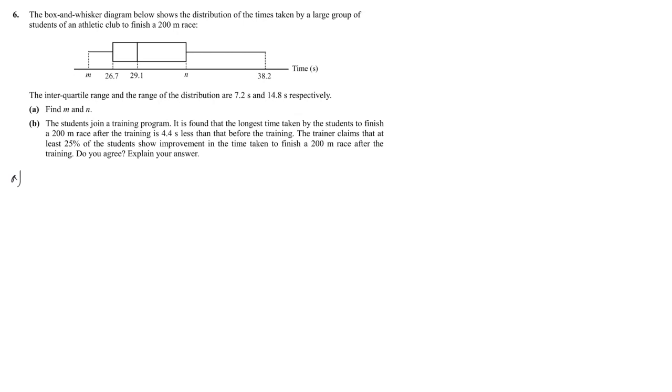This time they show you the distribution of certain data using a box-and-whisker diagram. A box-and-whisker diagram separates the data into four quarters. So the first quarter lies between M and this number, second quarter between 26.7 to 29.1, third quarter and also fourth quarter. So basically each section gives you 25% of the data.